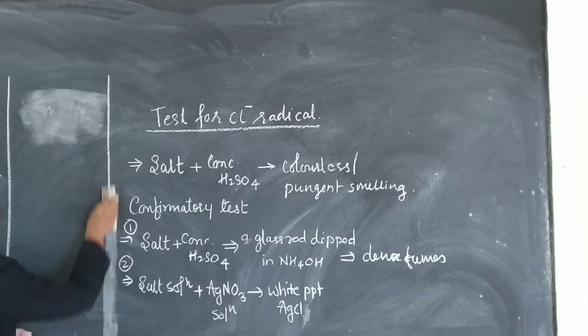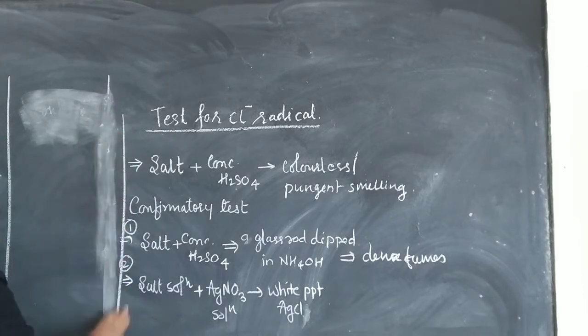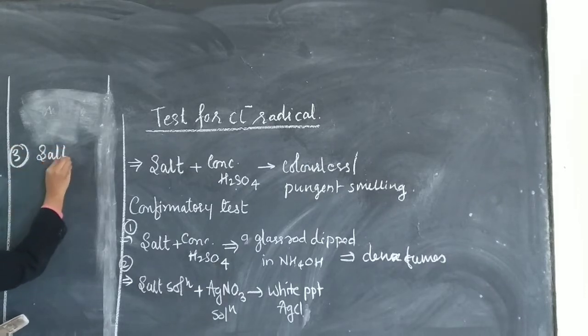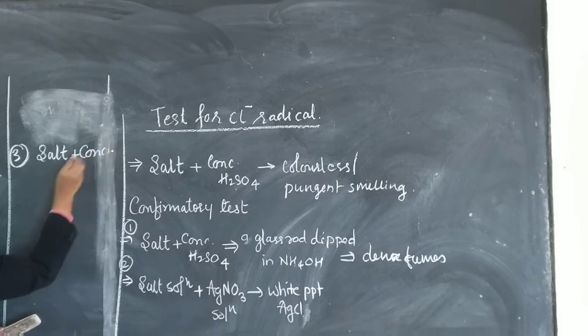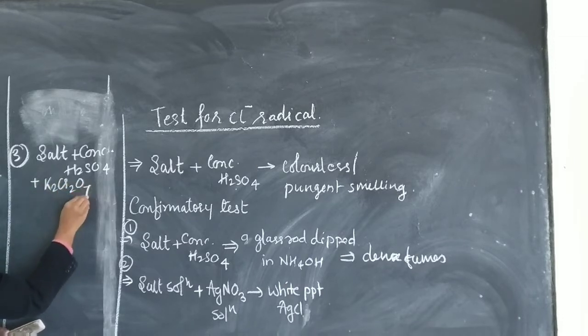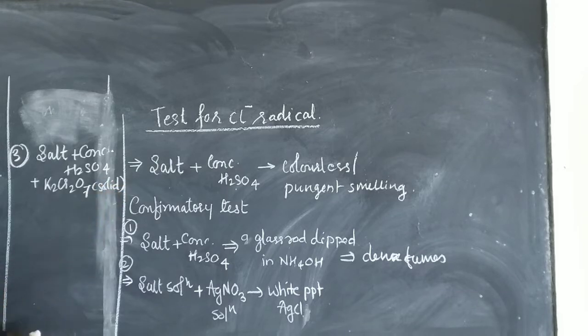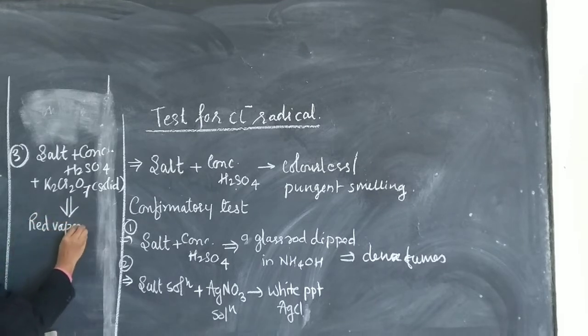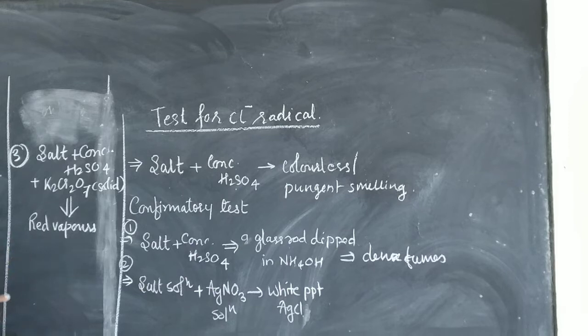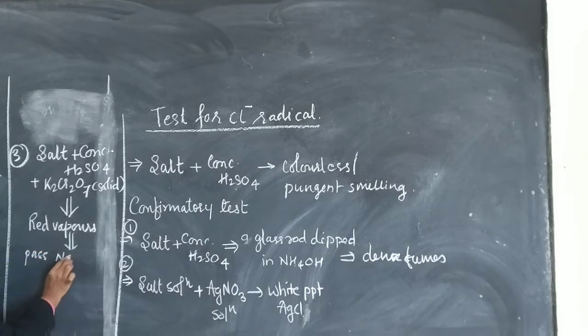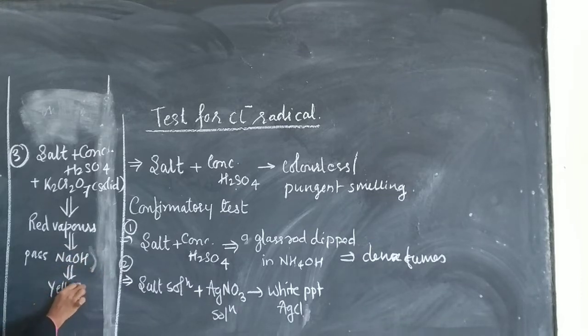One more confirmation for Cl negative radicals. The third confirmation: take salt plus concentrated H2SO4, and add solid K2Cr2O7. When you add this, red vapors will be released. When you pass these red vapors in NaOH solution, then NaOH solution will turn yellow. And this is also one of the confirmatory tests for chloride negative ions.